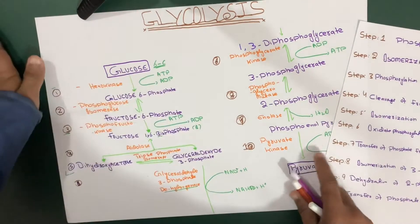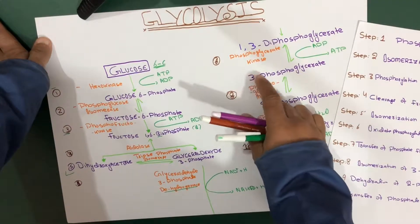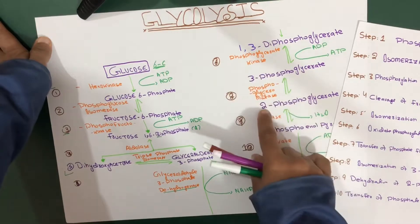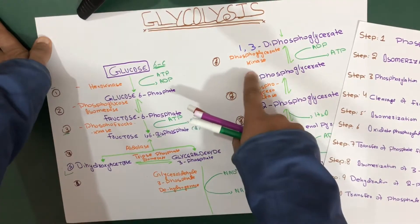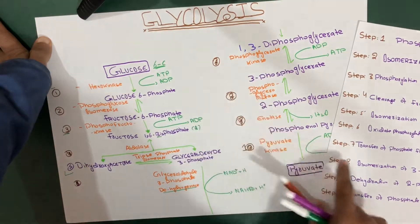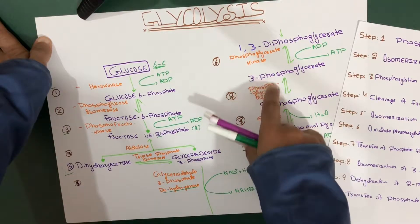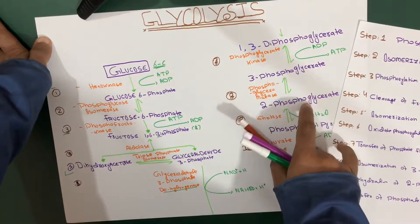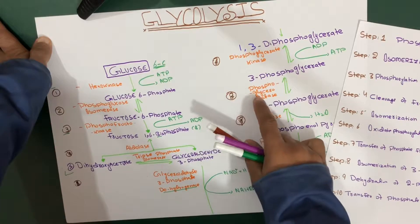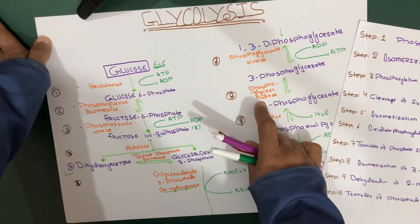Step eight is the isomerization of 3-phosphoglycerate. The phosphate group moves from carbon number three to carbon number two, forming 2-phosphoglycerate. This isomerization is catalyzed by the enzyme phosphoglycero mutase.